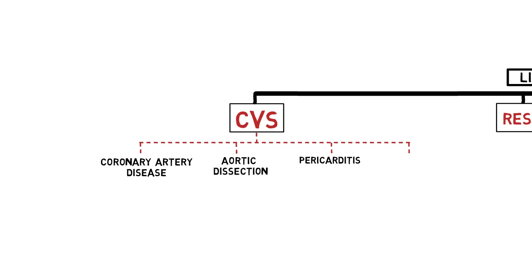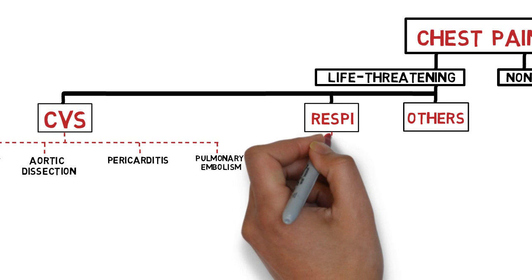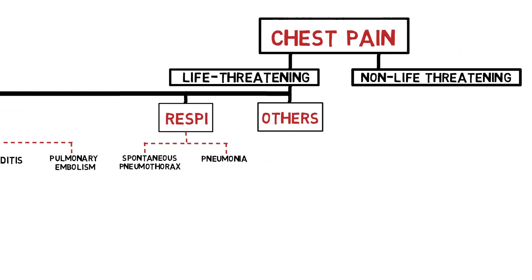Although pulmonary embolism categorically belongs to the cardiovascular system, the consequences of this disease — that is pulmonary infarction — will manifest into symptoms and signs that belong to the respiratory system, as we will see later. From the respiratory system, we have spontaneous pneumothorax and pneumonia. Other less common causes include mediastinitis and esophageal rupture.